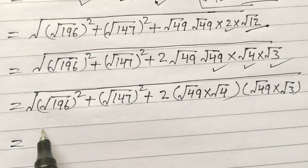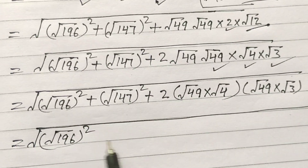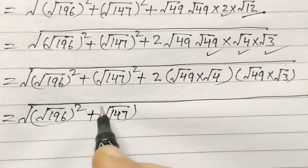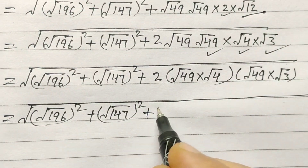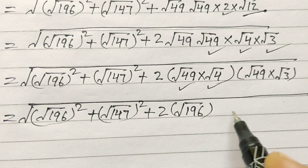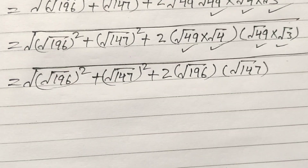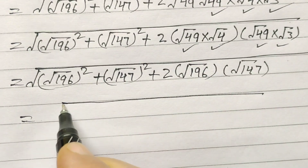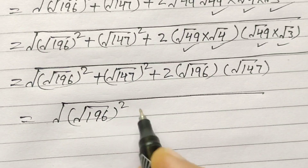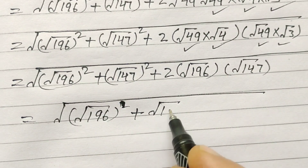Now in the next step, we have square root of 196 squared plus square root of 147 squared, plus 2 into square root of 196 into square root of 147. This is square root of 196 plus square root of 147, whole square.